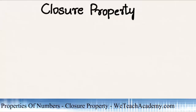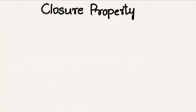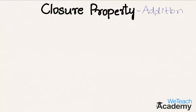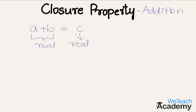Welcome to vdjacademy.com. In this presentation we are going to discuss closure property. Closure property on addition states that if two real numbers, say a and b, are added, then their sum must be a real number, say c.